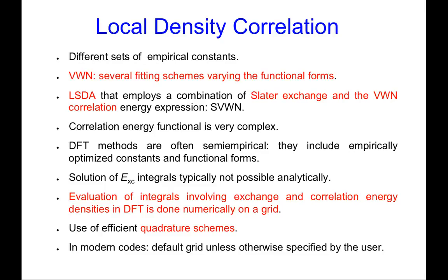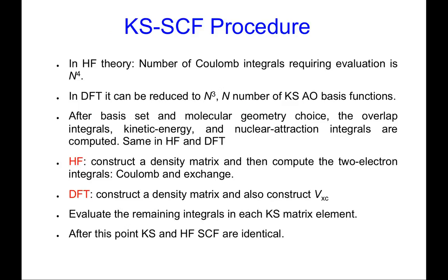Quadrature schemes play a role in modern codes, and there is typically some default grid used unless otherwise specified by the user. In our case we'll be using the quantum chemistry code Gaussian 09, and the keyword integral(grid=ultrafine) will be recommended in all the problem sets to get well-converged values for these integrals. So what happens in the Kohn-Sham self-consistent field procedure? In Hartree-Fock theory a bottleneck is that Coulomb and exchange integrals scale as N to the fourth, where N is the number of basis functions.